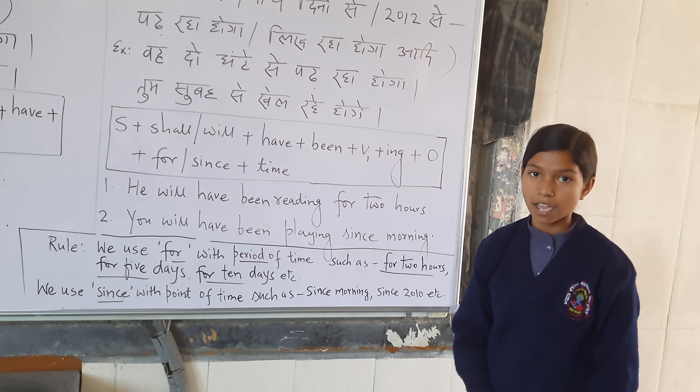Rule: We use 'for' with a period of time, such as for two hours, for five days, for ten days, etc. We use 'since' with a point of time, such as since morning or since 2006. Thank you.